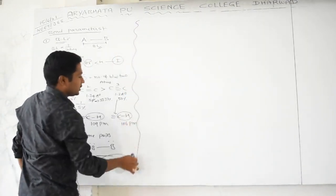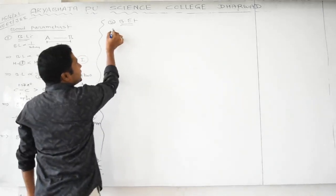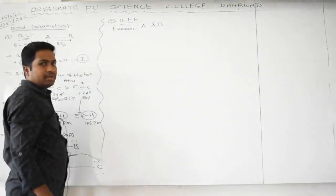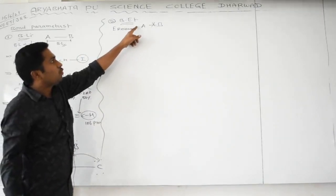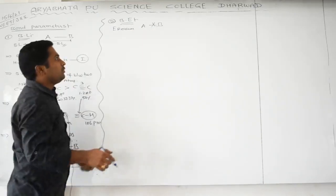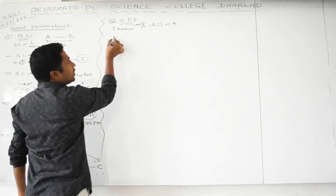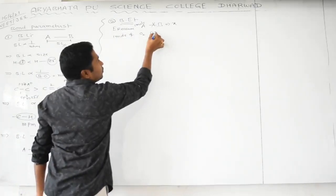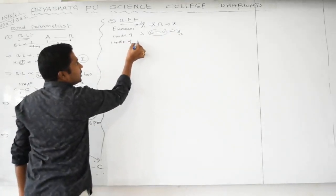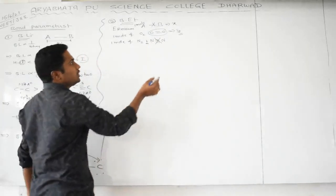The second bond parameter is bond energy. Bond energy is the energy required to break one mole of a particular bond between two atoms in a molecule. For example, the energy required to break one mole of an A–B bond is x, for O=O it is a different value, and for the nitrogen triple bond (N≡N) it is yet another value z kilojoules.